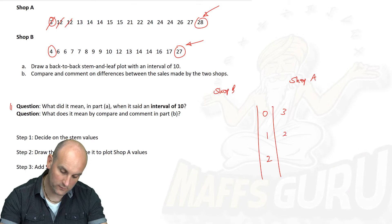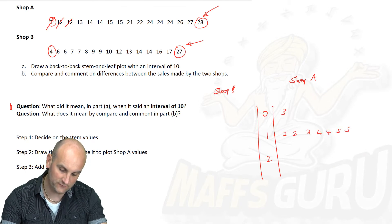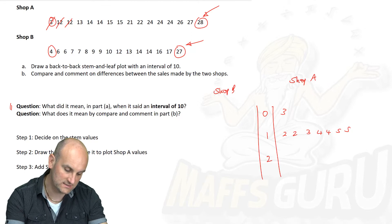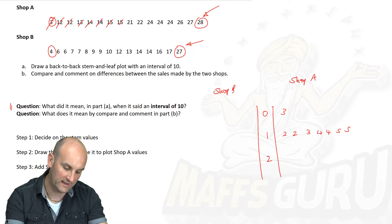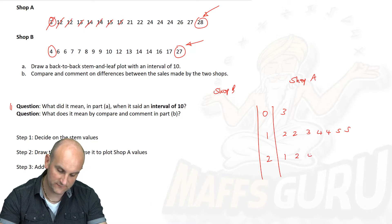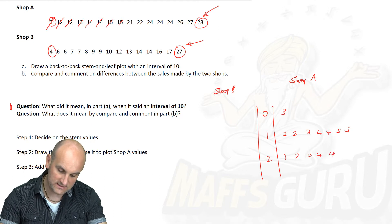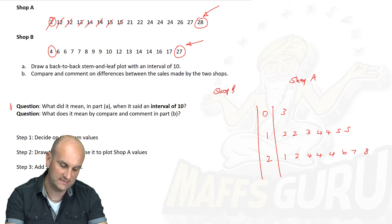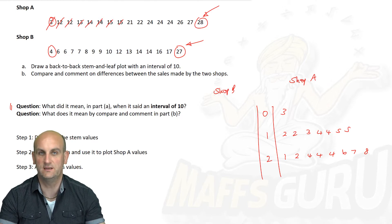Then 12, 12, so we do 12 and 12, and 13, 14, 14, 15, and 15. This is nice and easy because these are actually in order for me. Crossing these through. Then we get 21, 22, 24, 24, 24, 26, 27, and 28. I've now put all of my shop A onto my stem and leaf diagram.